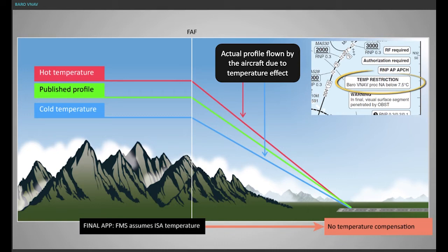A maximum outside air temperature may be published if the resulting vertical path angle exceeds the maximum permissible angle.